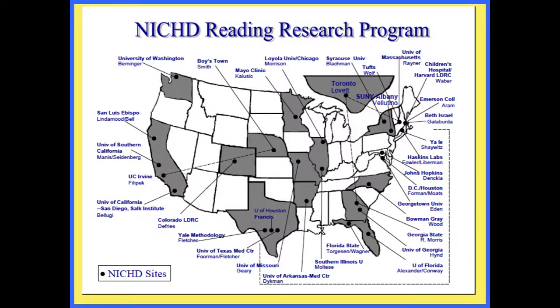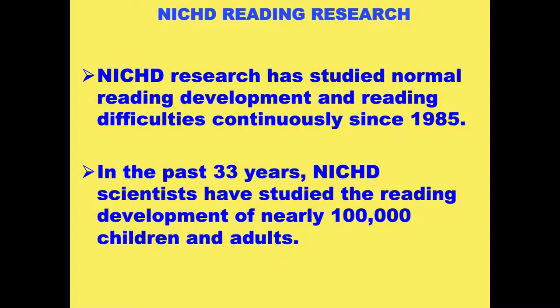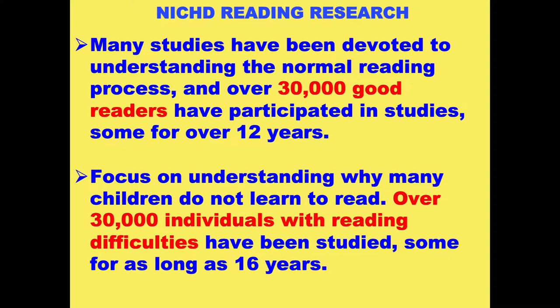They started by studying normal reading development — what happens when people read, what happens in the brain. They also studied lots of kids and adults who had never learned to read, and what happens when people don't learn how to read. They studied 30,000 good readers. Many of these studies went for between 5 and 16 years — they took kids in kindergarten and studied them through their first four years of college. They wanted to see not what happens from September to March, but what happens over the lifetime of the kid.